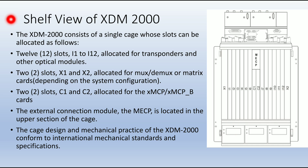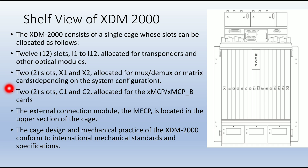The XDM 2000 consists of a single cage whose slots can be allocated as mentioned below. 12 slots I1 to I12 are allocated for the transponders and other optical modules. Two slots X1 and X2 are fixed for mux/demux or matrix card depending upon the system configuration. Two slots C1 and C2 are allocated for the XMCP cards. The external connection module, the MCP, is located in the upper section of this cage at C1 and C2. The cage design and mechanical practice of the XDM 2000 conforms to international mechanical standards and specifications.